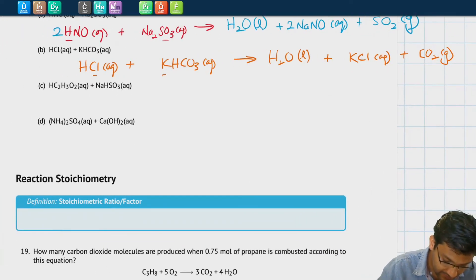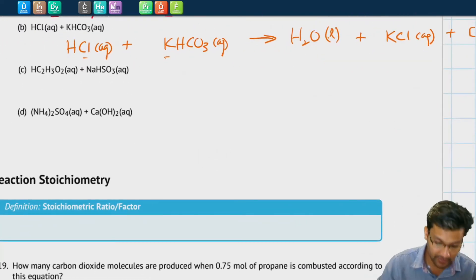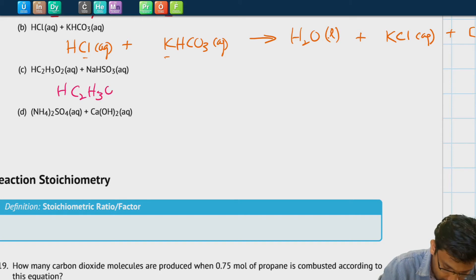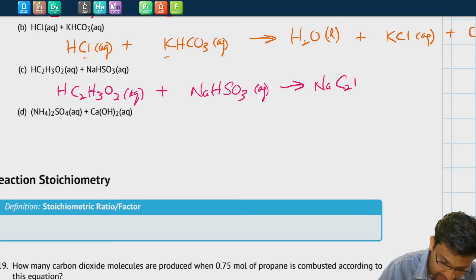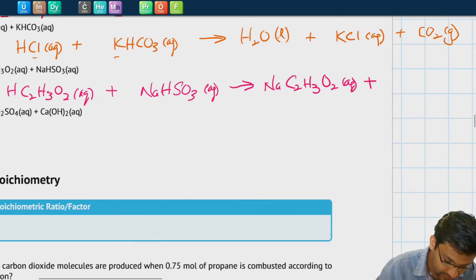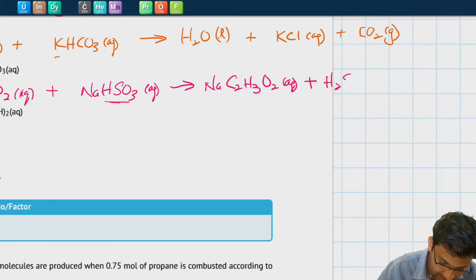Let's look at C. If you haven't done it yet, please pause the video now and do this by yourself. We have HC2H3O2 aqueous plus NaHSO3 sodium hyposulfite aqueous. The sodium reacts with the acetate to form sodium acetate aqueous.